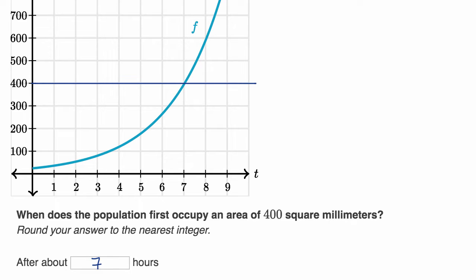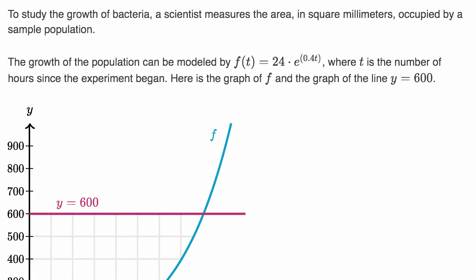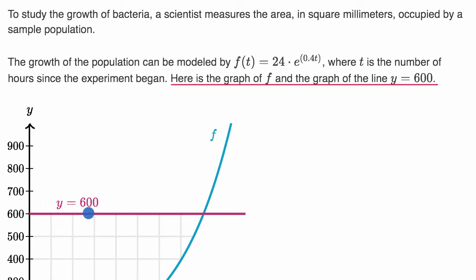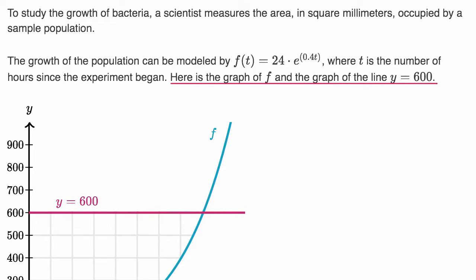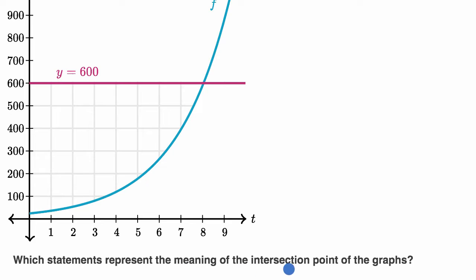Now let's do the next few examples that build on this. We're using the same setup — square millimeters to study the growth, the same function — but they add a next line: here is the graph of f and the graph of the line y = 600. So they've added that horizontal line to the graph.